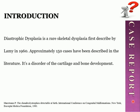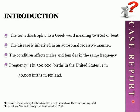As an introduction to Diastrophic Dysplasia: it is a rare skeletal dysplasia first described by Lamy in 1960. Approximately 150 cases have been described in the literature. The term 'diastrophic' is a Greek word meaning twisted or bent. The disease is inherited in an autosomal recessive manner and affects males and females at the same frequency. The incidence is one in 500,000 in the United States and one in 30,000 in Finland.